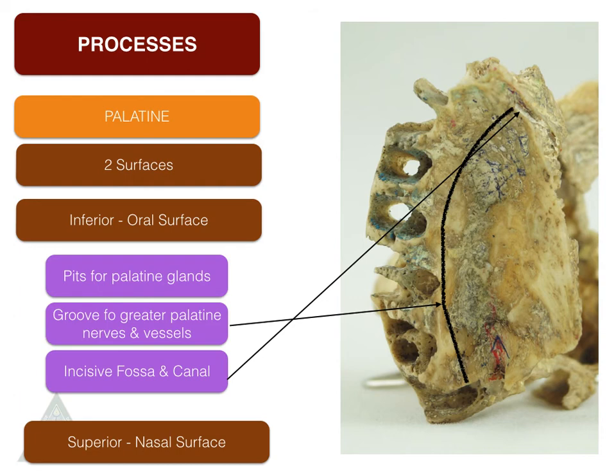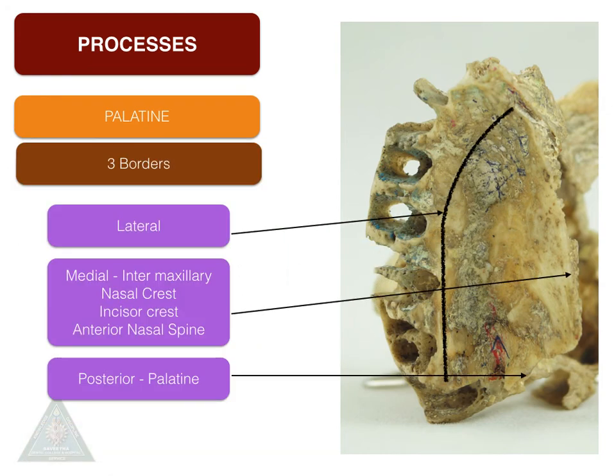The superior surface, or the nasal surface, forms the floor of the nasal cavity and is very smooth. The borders of the palatine process — there are three borders: the lateral border, which is curved and attached to the medial surface of the body; the medial border, or the intermaxillary border, which articulates the other side maxillary bone. It is elevated to form the nasal crest; the anterior part is called the incisive crest, and the most anterior part is elevated to form the anterior nasal spine. The posterior border is otherwise called the palatine border and forms the palatomaxillary suture.